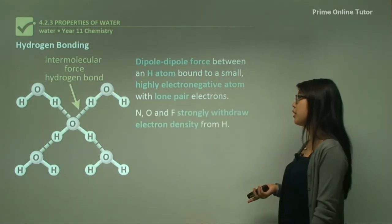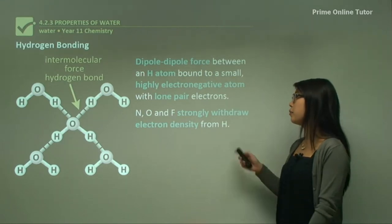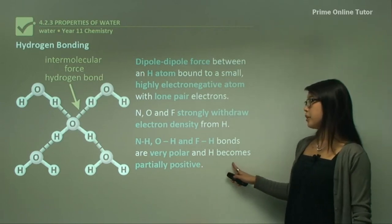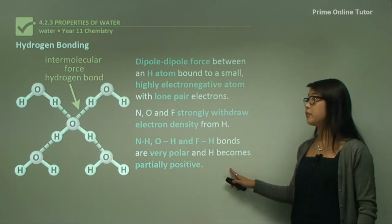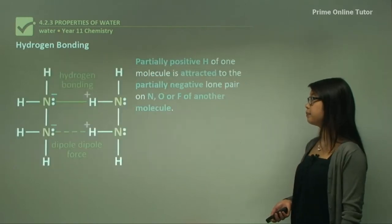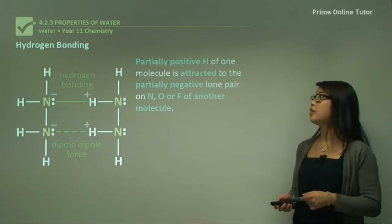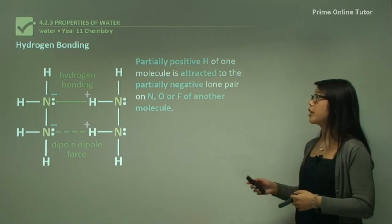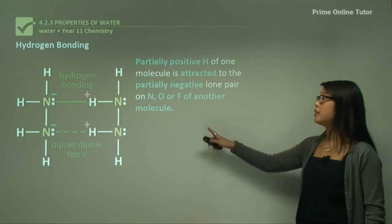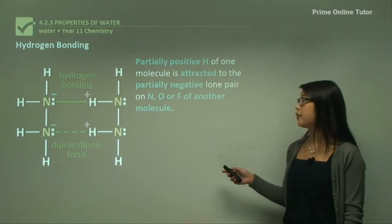Nitrogen, oxygen, and fluorine strongly withdraw electron density, meaning they are highly electronegative relative to hydrogen. These bonds are very polar, and hydrogen becomes slightly partially positive while oxygen, nitrogen, or fluorine are slightly negative. So the partially positive hydrogen of one molecule is attracted to a partially negative site or lone pair of another molecule. Lone pairs are found on the nitrogen, oxygen, or fluorine of another molecule.